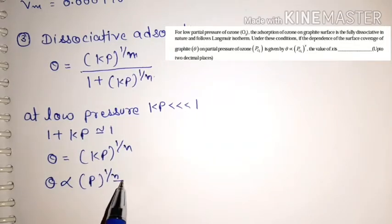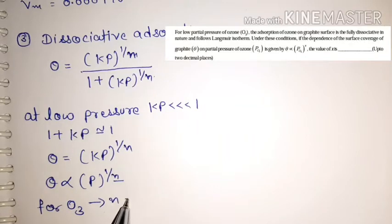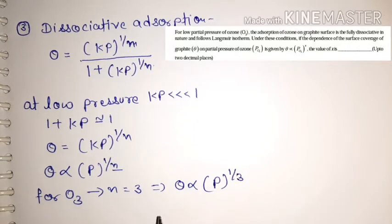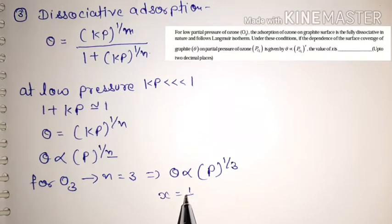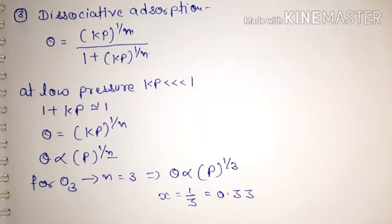Here n depends on the number of gas atoms. For a diatomic gas n = 2, for a triatomic gas n = 3, and for a monatomic gas n = 1. Since the question gives ozone O₃, which is triatomic, n = 3. Therefore θ ∝ p^(1/3), so x = 1/3 = 0.33.